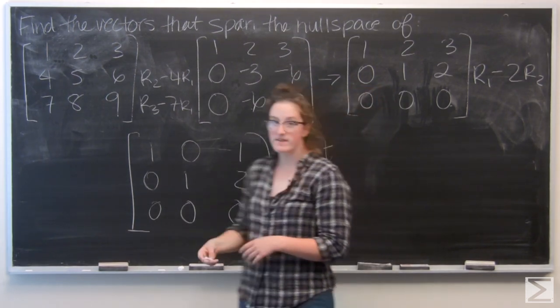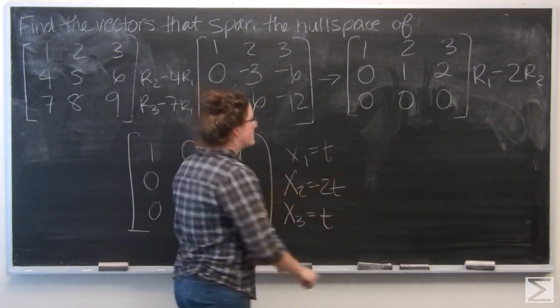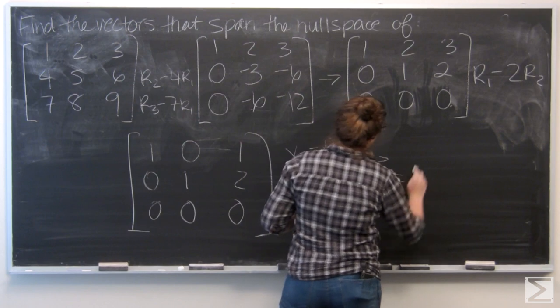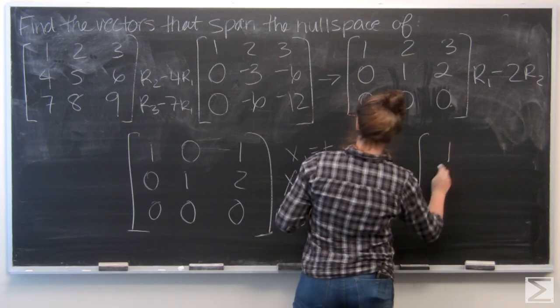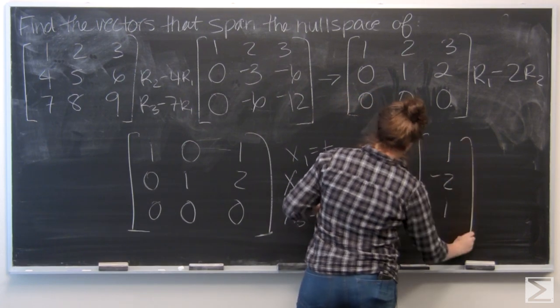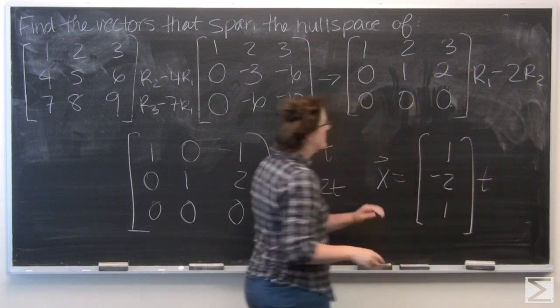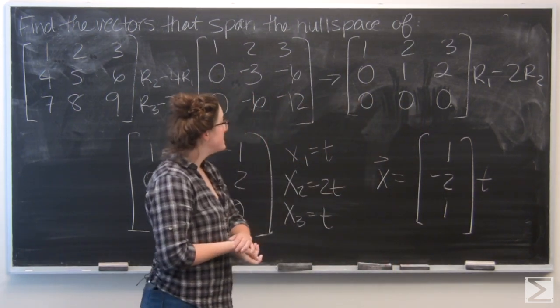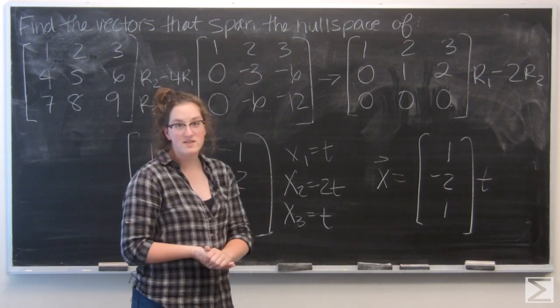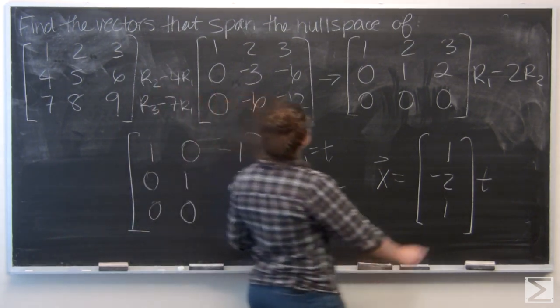And if I put this solution in a vector form, I'm going to pull out the t. And I'm left with that vector times t. And that vector is going to span the null space of this matrix.